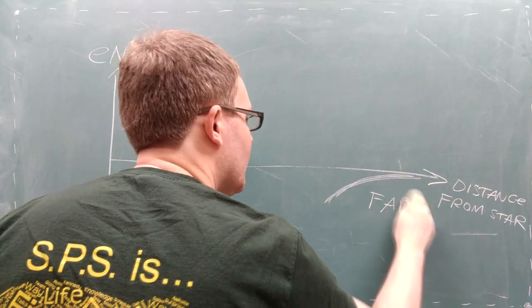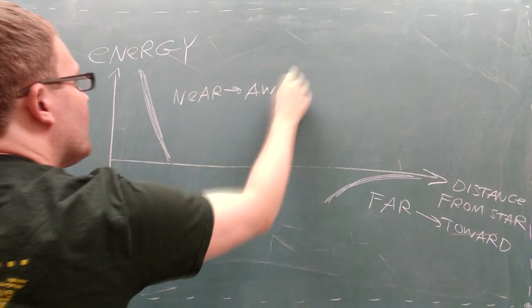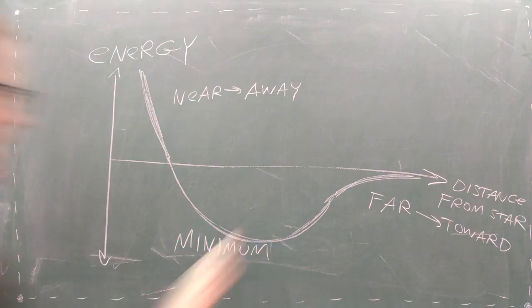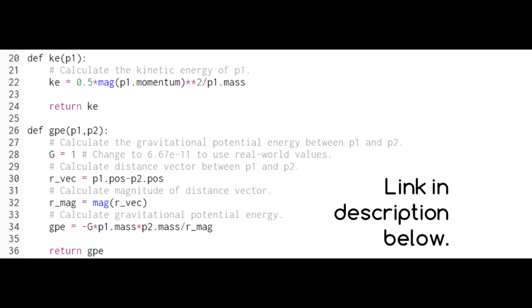Last time, we saw that the energy of an orbit uniquely determines its shape. It's also important to note that the total energy of all orbits in a planetary system remains constant as the objects move around the star. We call this behavior conservation of energy, and we can evaluate it using our code.